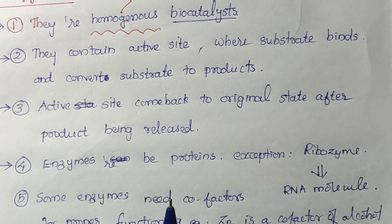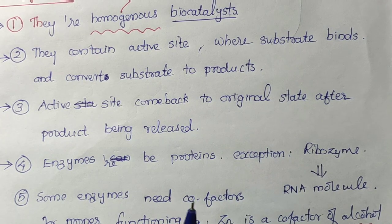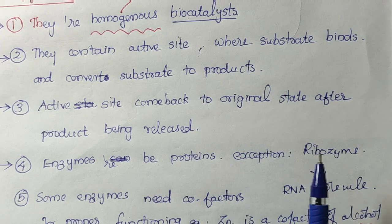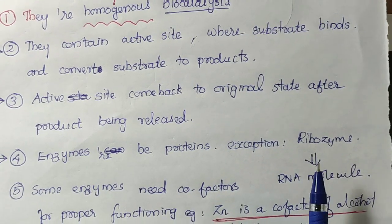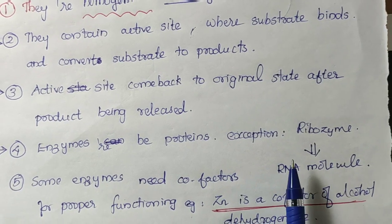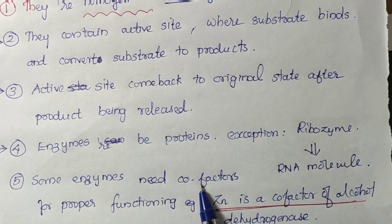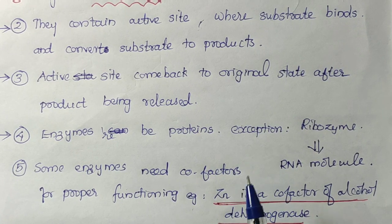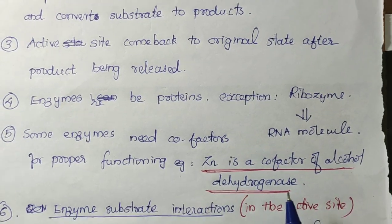Enzymes are proteins, or can be proteins. An exception to this is ribozyme, which is a catalyst that is not a protein — ribozyme is an RNA molecule. Some enzymes need cofactors like metals for their proper functioning. For example, zinc is a cofactor of the alcohol dehydrogenase enzyme. We will discuss this further when we introduce bioinorganic chemistry in detail.